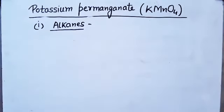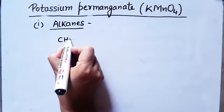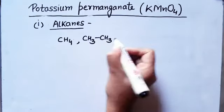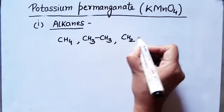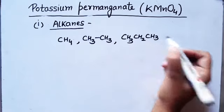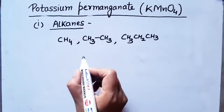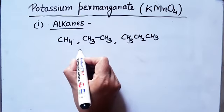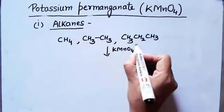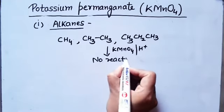In alkanes that have primary or secondary carbon atoms — for example, propane: CH₃-CH₂-CH₃ — the carbon atoms are either secondary or primary. If we treat these with KMnO₄ in any medium (generally the reaction occurs in acidic medium), there is no reaction and no product is formed.